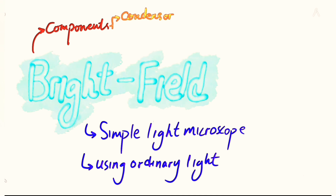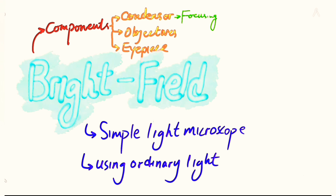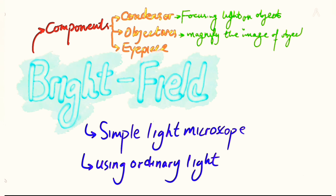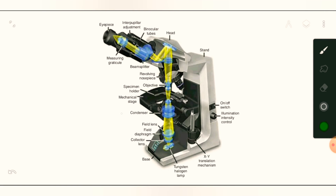The components of the brightfield microscope are three main components, and every brightfield microscope, no matter where it is built or what shape it has, will have these three components: condenser, objectives, and eyepiece. The condenser focuses the light on the object being studied. The objective magnifies the image of the object and transfers it through the eyepiece. The eyepiece is the ocular lens that further magnifies the image, making it visible for the observer.